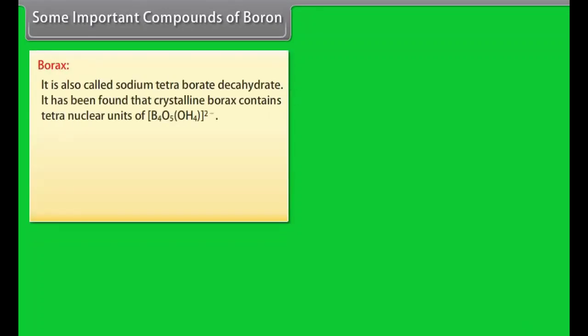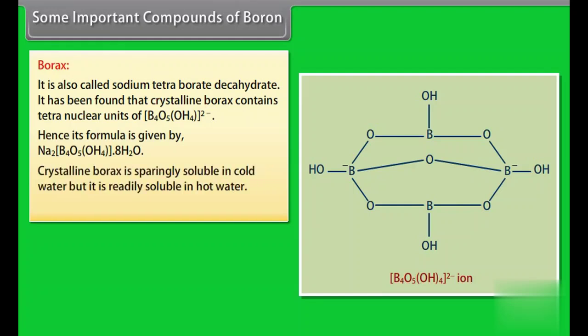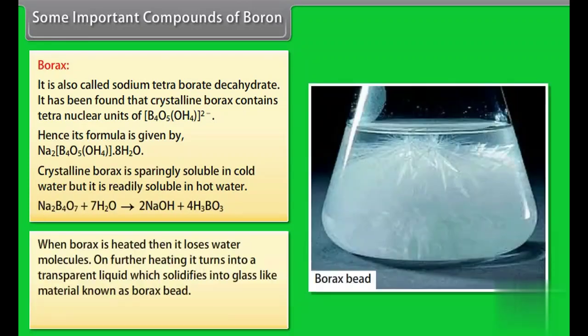Some important compounds of boron. Borax. It is also called sodium tetraborate decahydrate. It has been found that crystalline borax contains tetranuclear units of B4O5(OH)4 2-. Hence its formula is given by Na2[B4O5(OH)4]·8H2O. Crystalline borax is sparingly soluble in cold water but it is readily soluble in hot water. When borax is heated then it loses water molecules. On further heating it turns into a transparent liquid which solidifies into glass-like material known as borax bead.